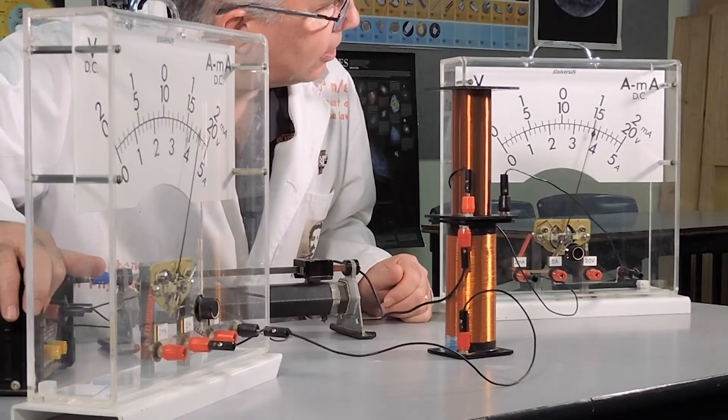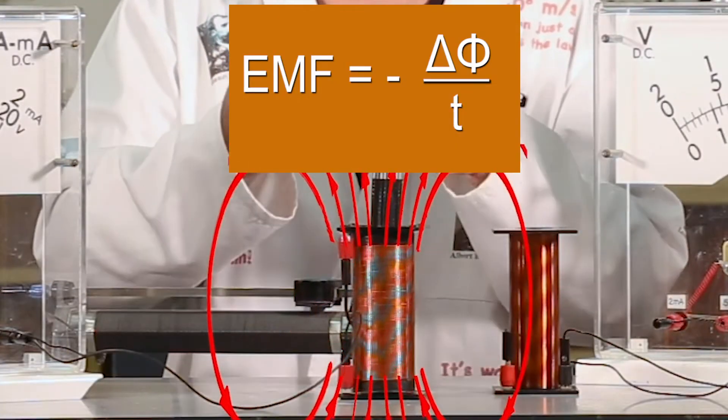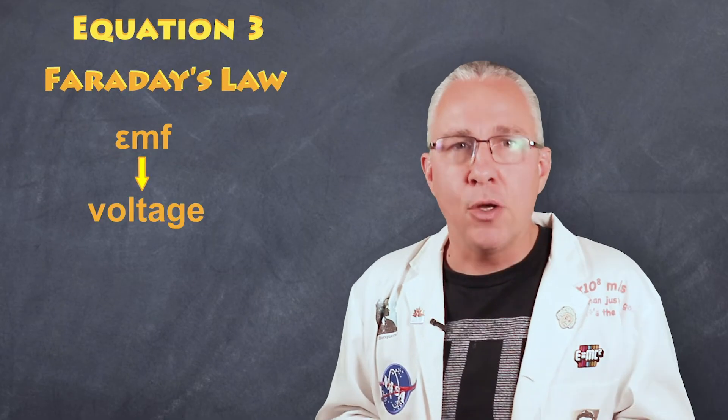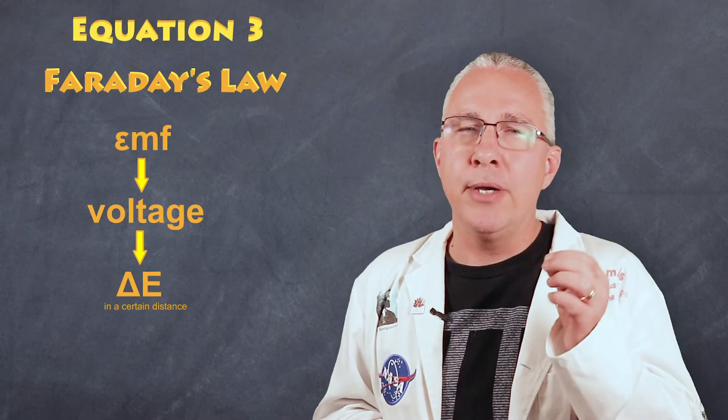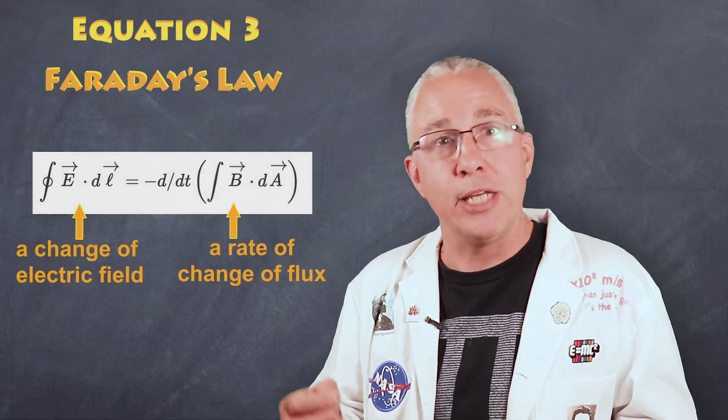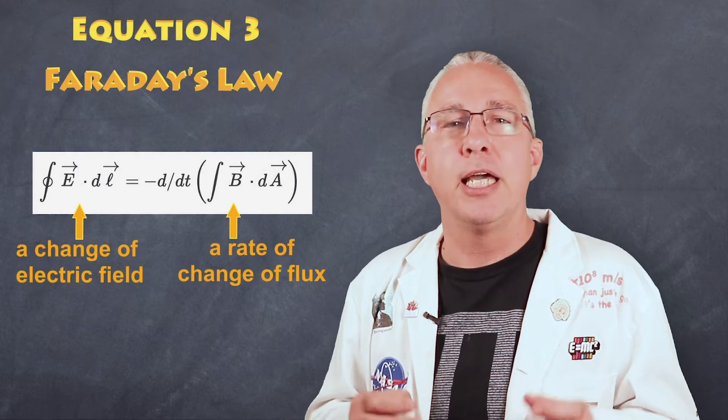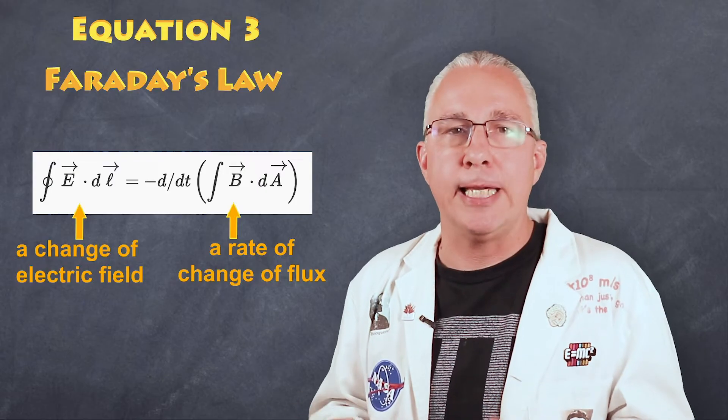Now let's move on to the third equation and basically it describes Faraday's law of induction. Now the way it's often taught in high school is that the EMF equals the rate of change of flux, but what is EMF? EMF is voltage and voltage is a change in electric field strength. So in essence a changing magnetic flux causes a changing in an electric field, hence voltage. And in essence that is what the third equation means.